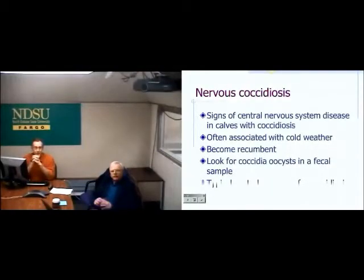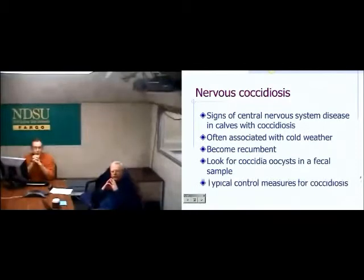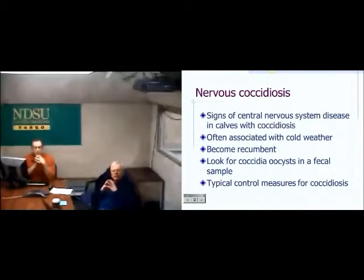Nervous coccidiosis is usually related to animals that already have a coccidial infection. You can't really see microscopic changes in the brain, but these animals clearly have neurologic disease and will go down and die — it involves some kind of byproduct from the coccidial infection. Anecdotally, these are cows that drop when they come out of a chute, but they typically already have a coccidial infection in the intestine.